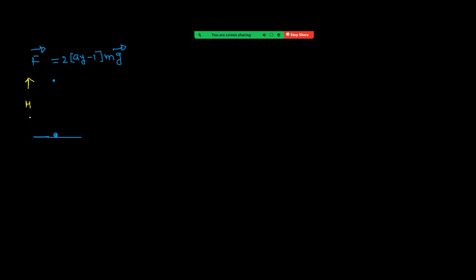Initially velocity is zero, and finally velocity is also zero at maximum height. That means delta K equals zero. That means we can write the work-energy theorem: net work equals delta K. Let us write down what is the net force. I am taking the vector form.